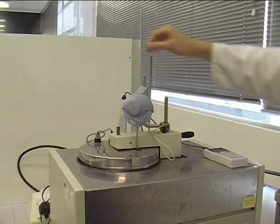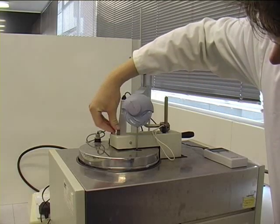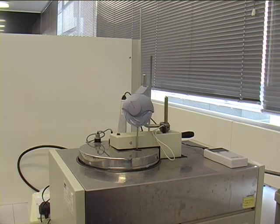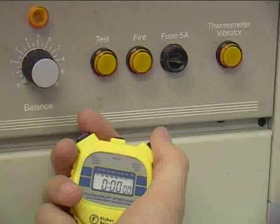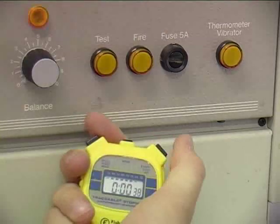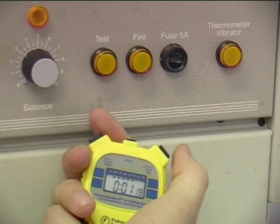Once the ready light on the calorimeter has come on, the apparatus can then be fired by pressing and holding the fire button. Once fired, the temperature should be monitored every minute until it stops rising. At this point, the apparatus can be disassembled.